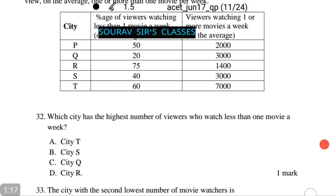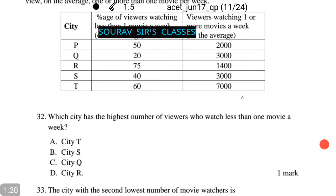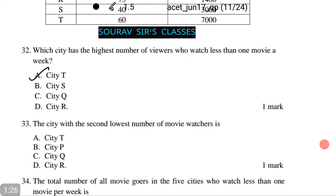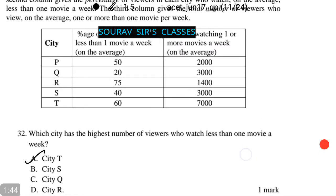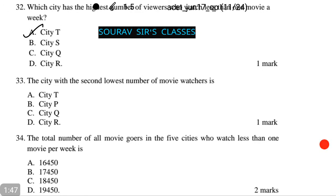City T contributes the largest number to the sum in the problem. Moving on to the next question, we have to calculate the city with the second lowest number of movie watchers. City P has the second lowest number of movie watchers, which is 4000. We obtain that by 2000 divided by 1 minus 50 percent, who watch the movies. That is option number B.